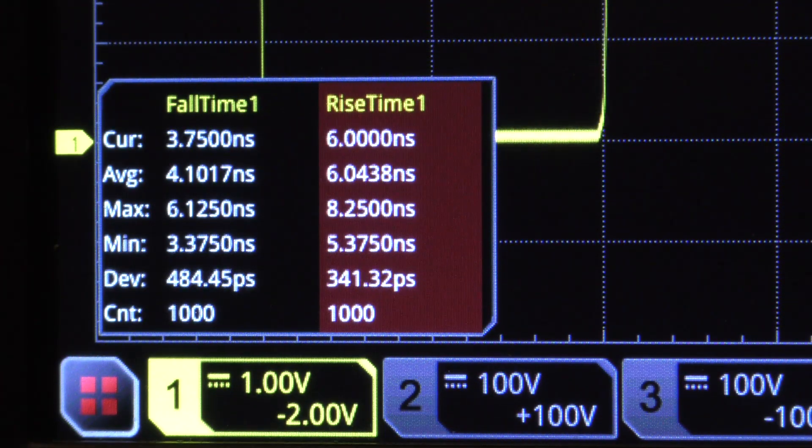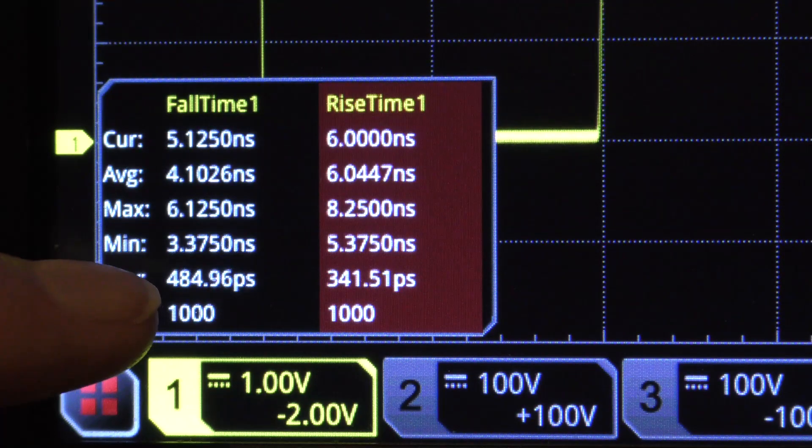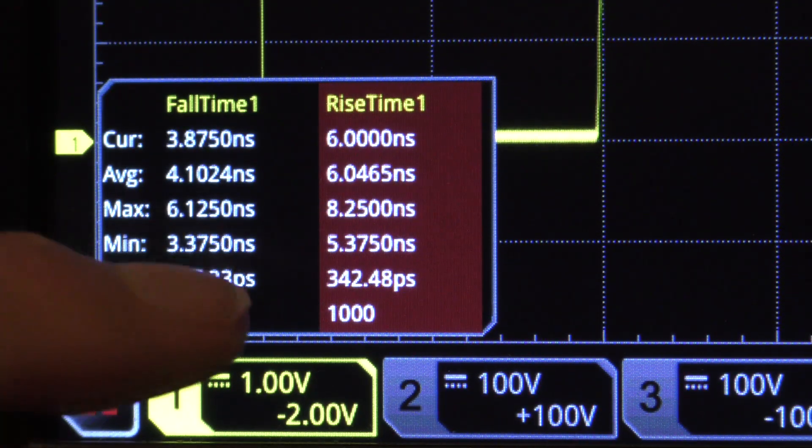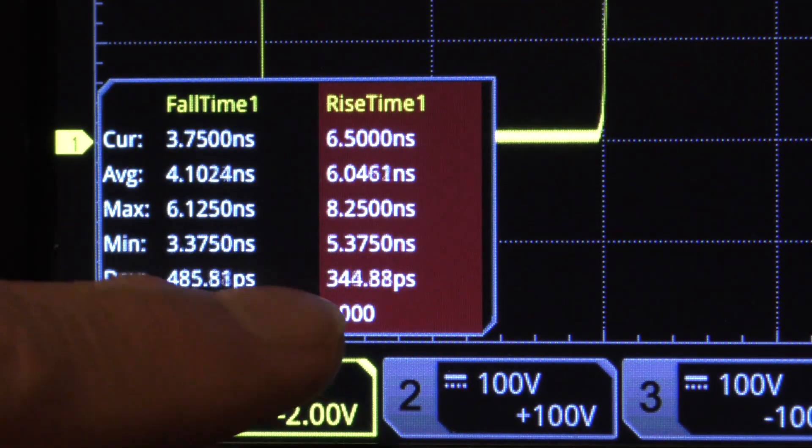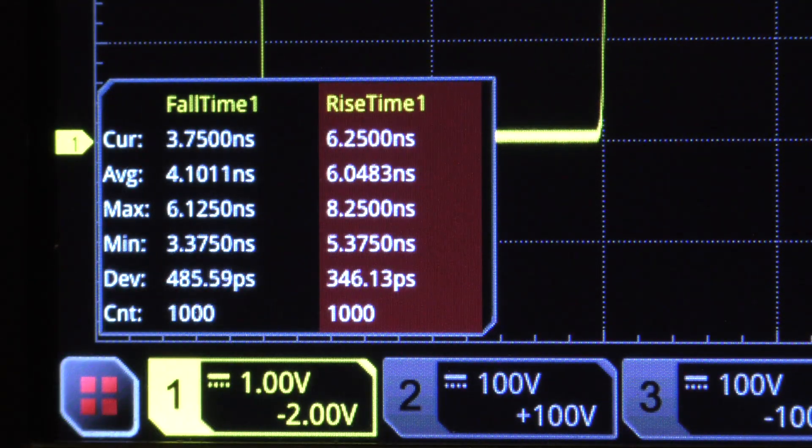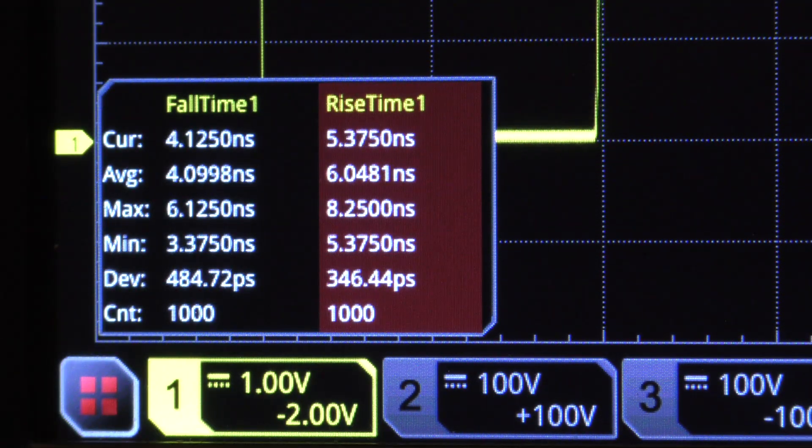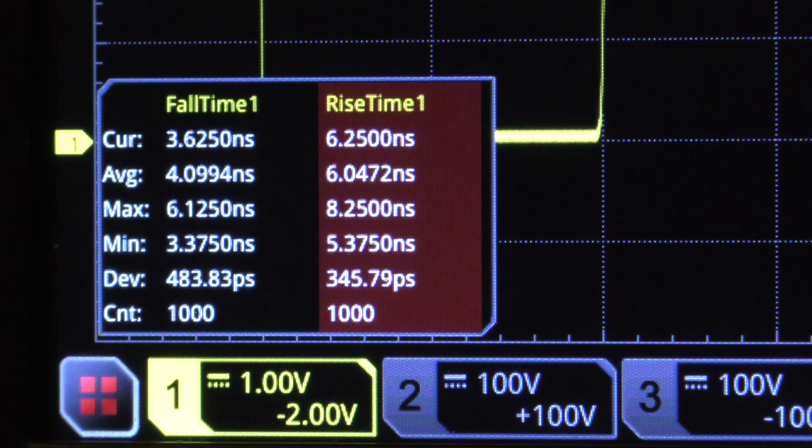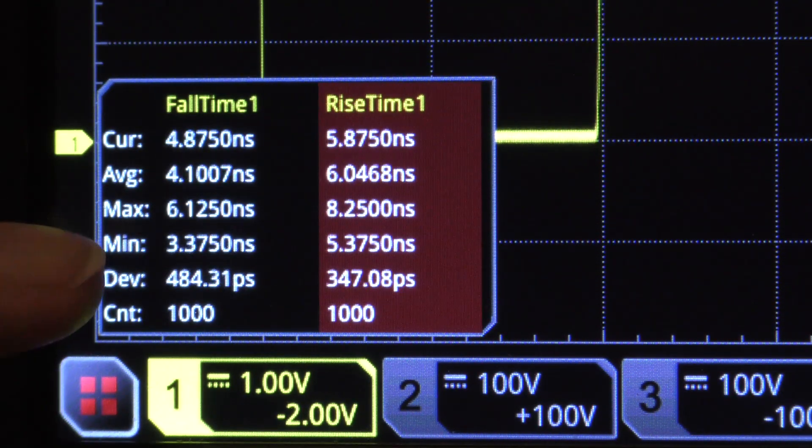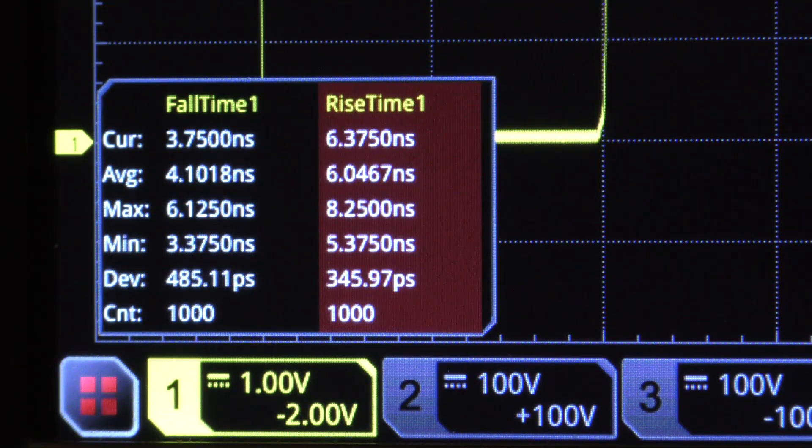I have collected statistics of a thousand rise times and a thousand fall times for this signal. The deviation on the fall time is about 480 picoseconds, and on the rise time the deviation is 344 picoseconds. So what we suspected, which is that the fall time of this signal is slower than the rise time, is true.